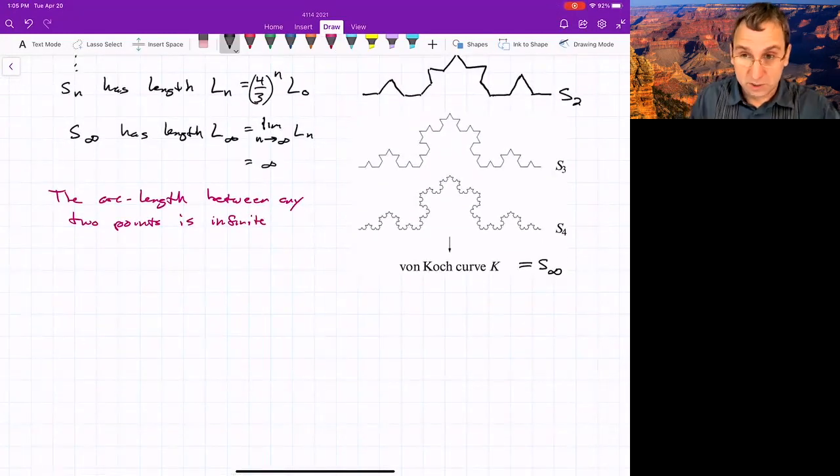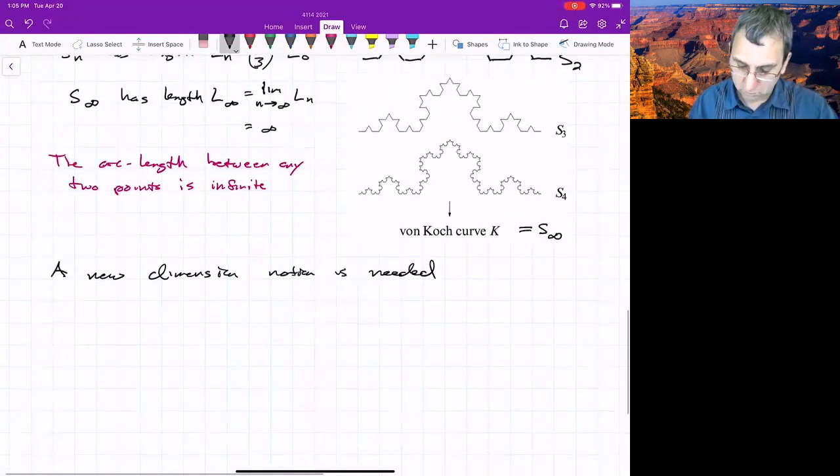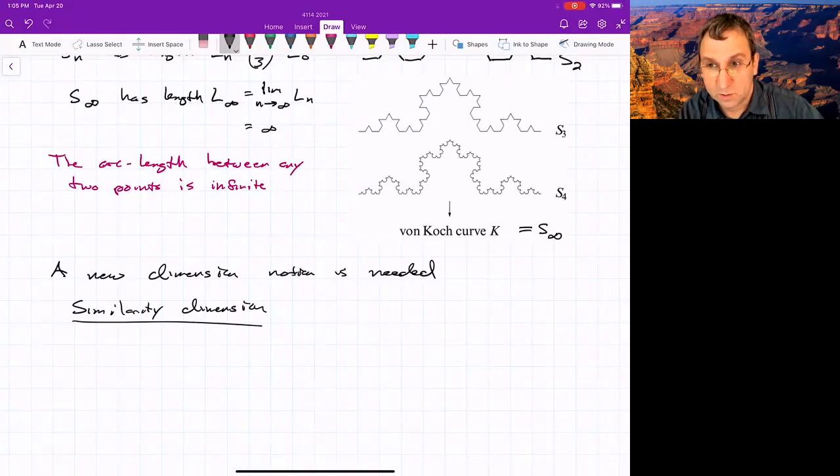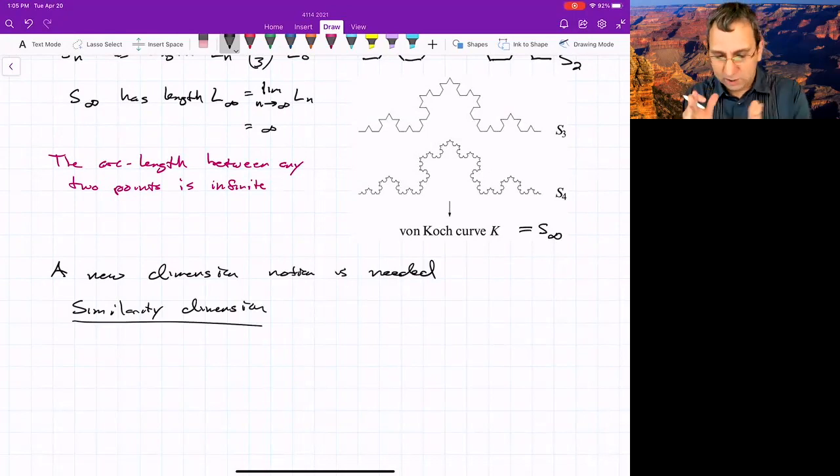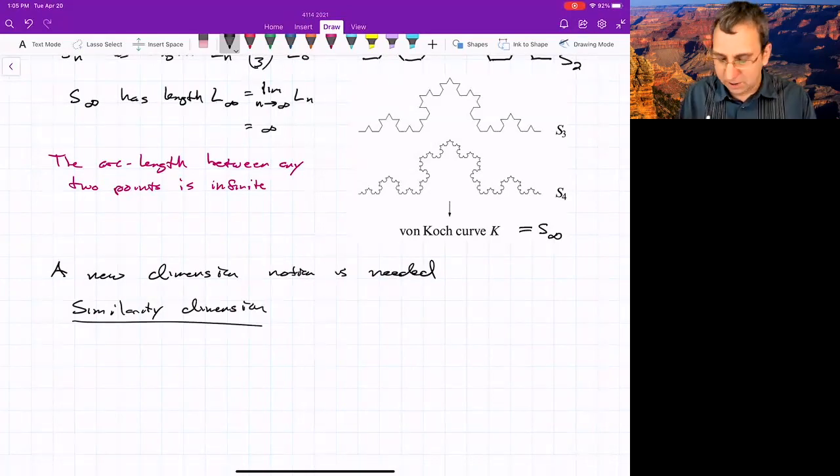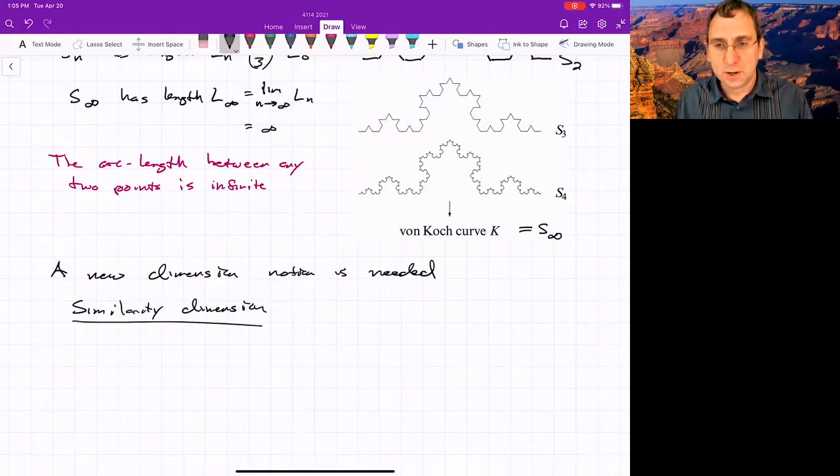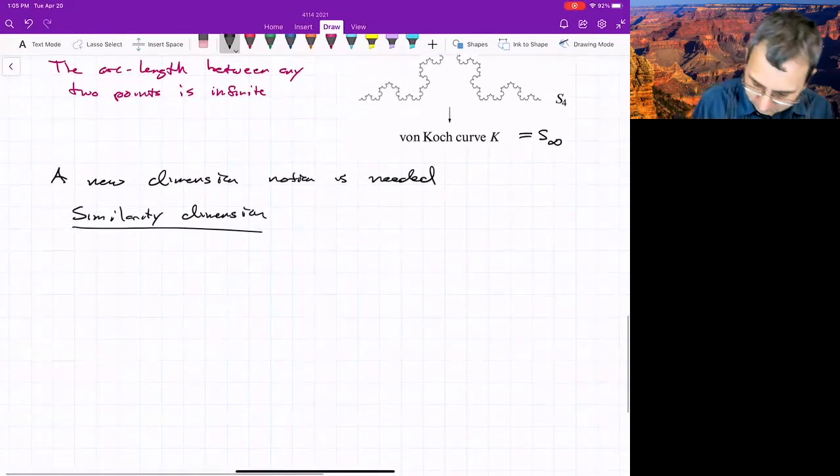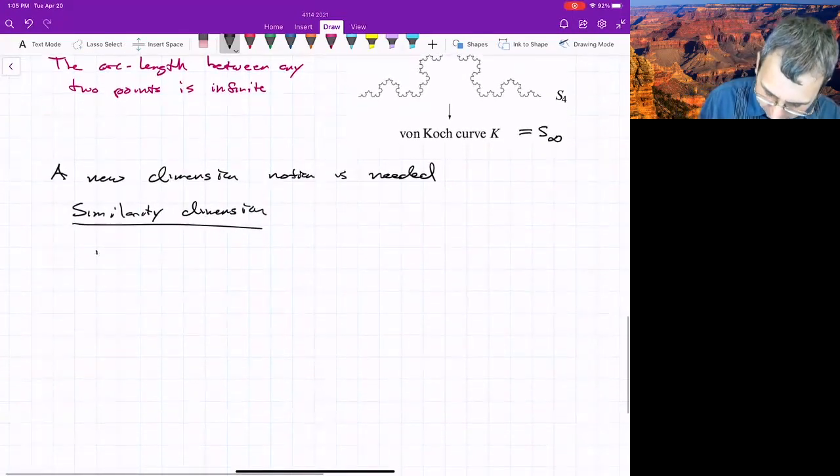This is the similarity dimension. The Koch curve and the Cantor set, they're both self-similar. So they're made of scaled-down copies of themselves, all the way down to arbitrarily small scales. So the dimension of these fractals could be defined by extending an observation about familiar sets, like line segments, squares, and cubes. So let's just show a square. There's a square.